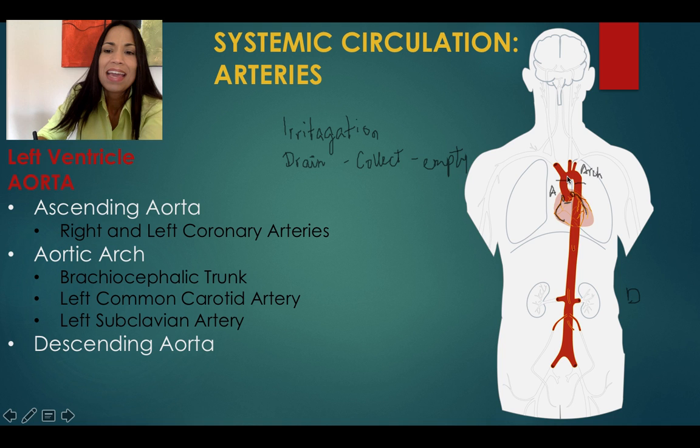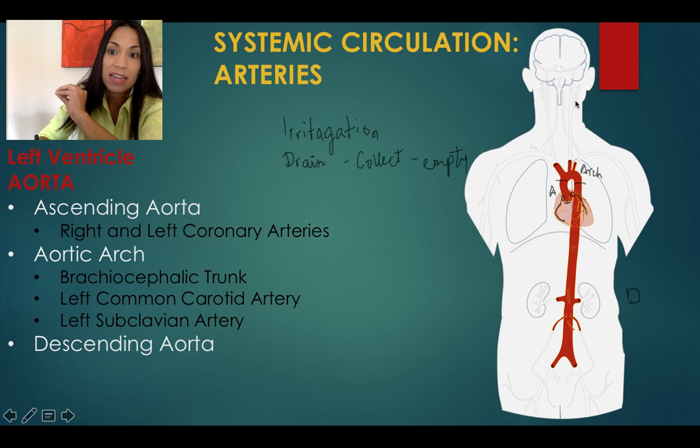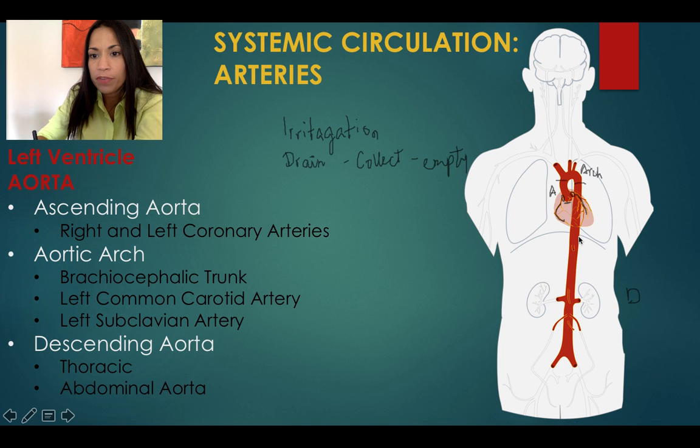This is our starting point to describe the major arteries of the neck and head and the major arteries of the upper limb. Now let's follow the descending aorta. The descending aorta has one portion that is above the diaphragm — that's your thoracic aorta — and the portion inferior to the diaphragm, that's the abdominal aorta.